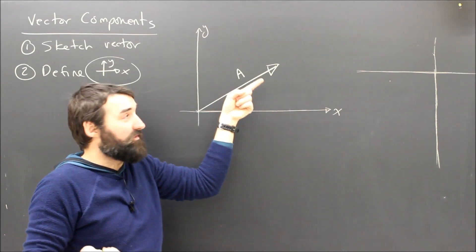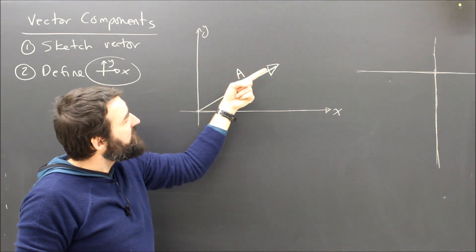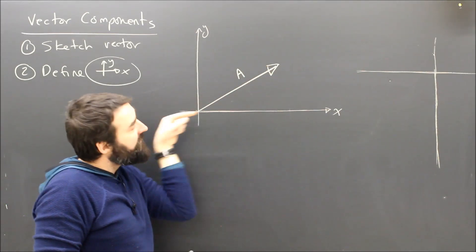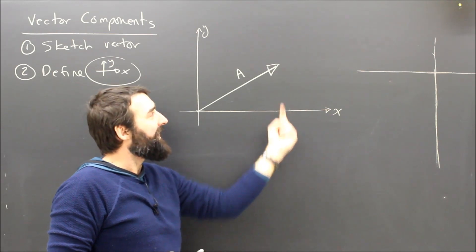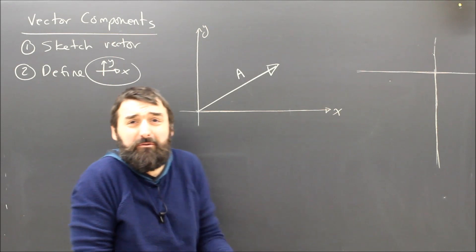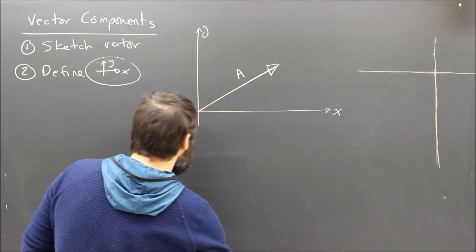I don't know what it is: a force, a velocity, an acceleration, a displacement. It could be anything. It's pointed this way. How much of this vector is pointing in the x direction, and how much of it is pointing in the y direction? Because component, you might know, is a fancy word for part. I can break the component into parts.